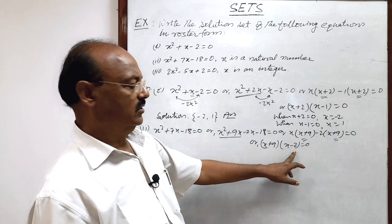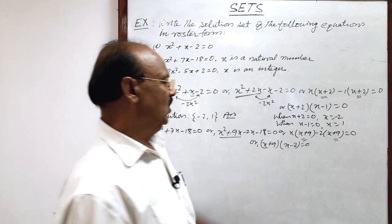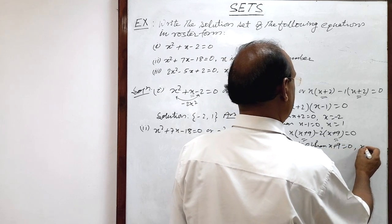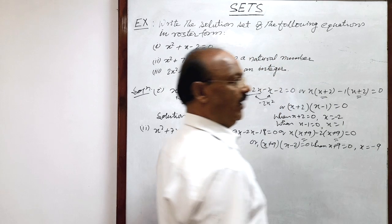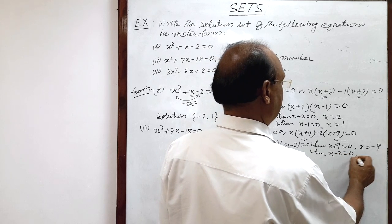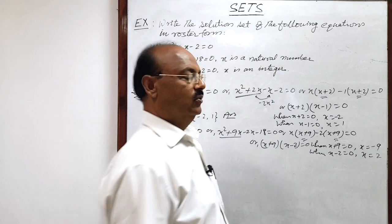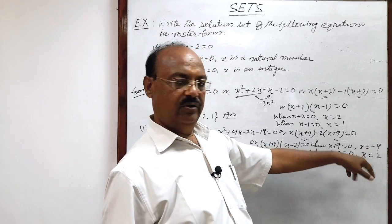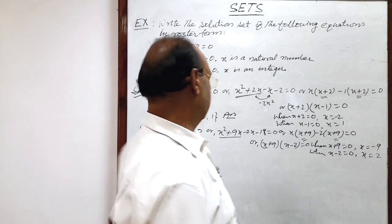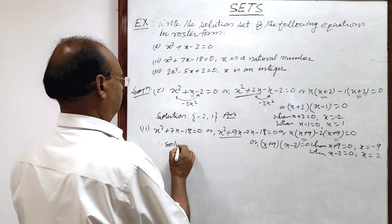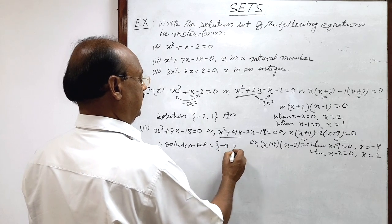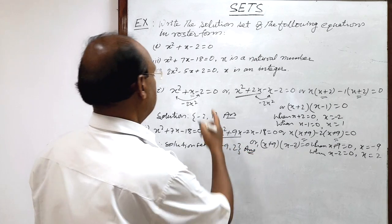Since both brackets are equal, we take x plus nine common, giving (x plus nine)(x minus two) equals zero. Either factor can be zero. When x plus nine equals zero, x equals minus nine. When x minus two equals zero, x equals two. So the solution set of this quadratic equation is {-9, 2}.